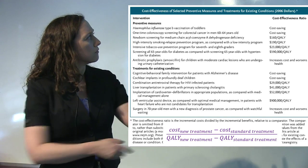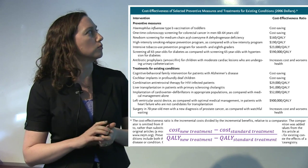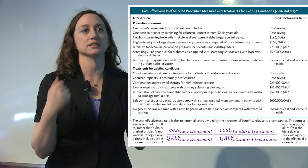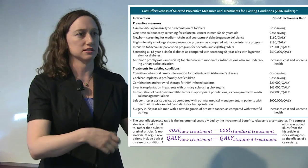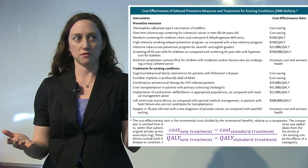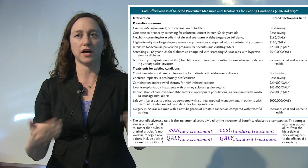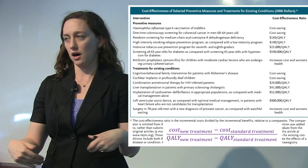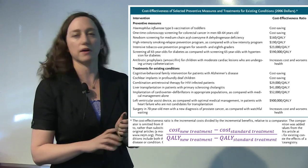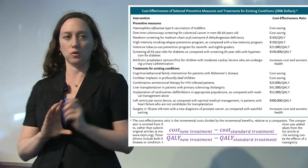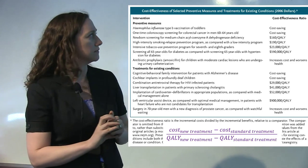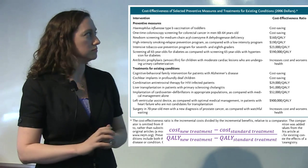We can compare examples: a high-intensity smoking relapse prevention program compared with a low-intensity program costs $190 per quality-adjusted life year — for every extra $190 spent on more support, someone lives one quality-adjusted life year longer. These ratios range up to really outrageous values like $590,000 to give someone one year of life, for instance screening all 65-year-olds for diabetes versus screening only people with hypertension.